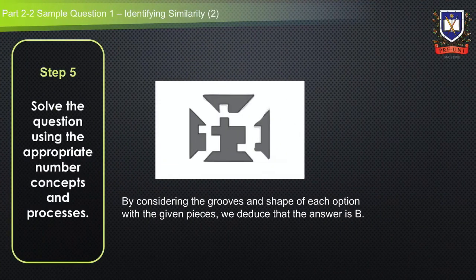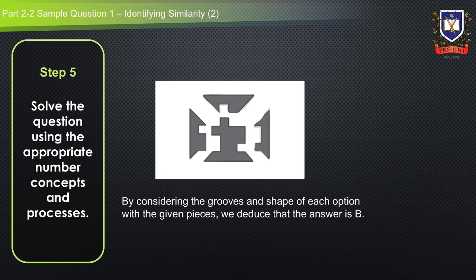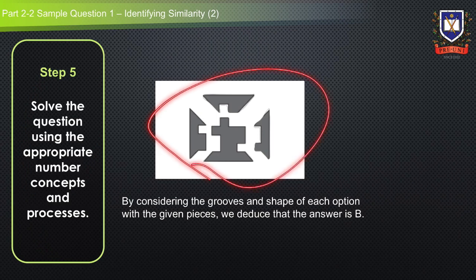Finally, step five is to solve the question using the appropriate number concepts and processes. By considering the grooves and shapes of each option with the given pieces and using the process of elimination, we can deduce that the answer is B.